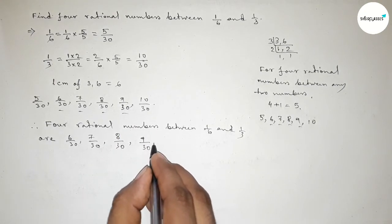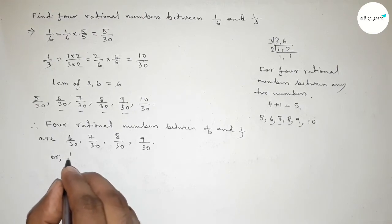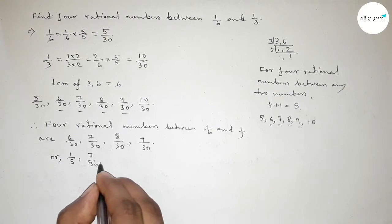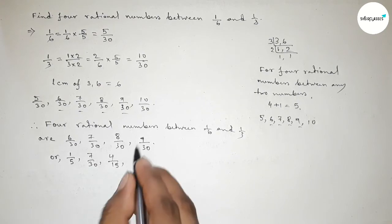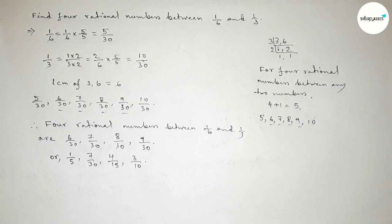Or we can write, if you divide both numbers by 6, then this is 1 over 5. If you divide both numbers by 2, then 4 over 15. And this is 3 over 10 by dividing both numbers by 3.